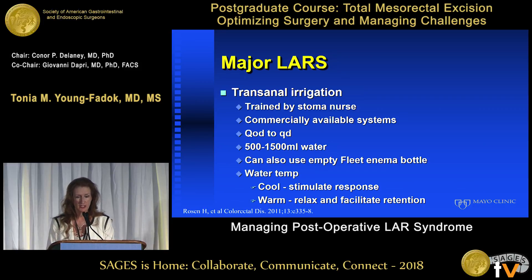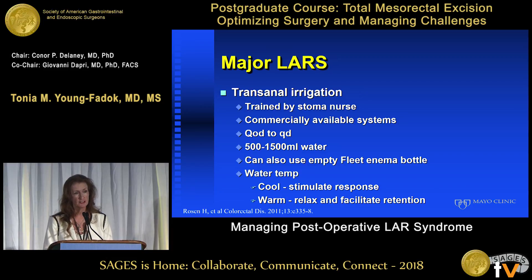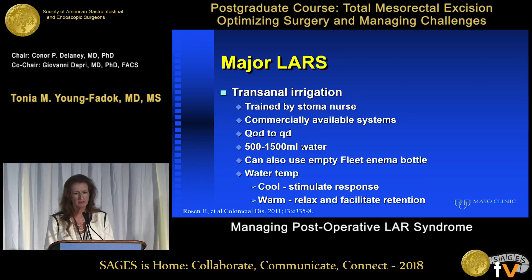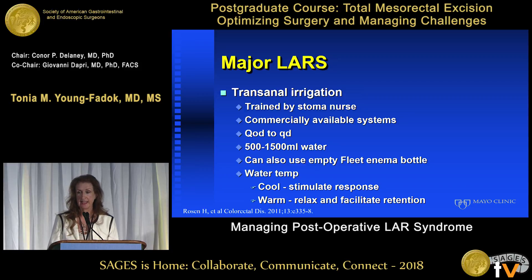A stoma nurse can help with educating patients, and the technique is generally very simple. Commercially available systems allow the irrigant to be in the range of 500 to 1,500 mL. Simple water is fine — it's intestinal mucosa and water won't hurt it in these volumes. Regarding water temperature, a warm liquid will make the bowel relax, which is better for a retention enema. Since we want to stimulate movement of the colon, it's better to use cool or room temperature water.